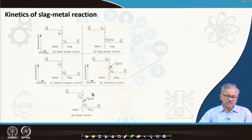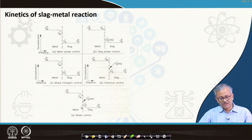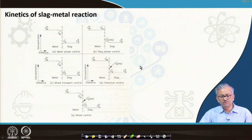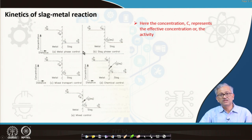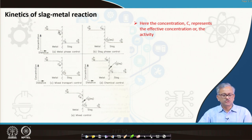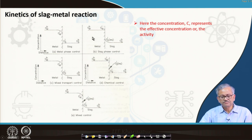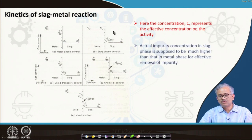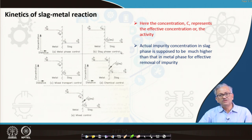Mixed control refers to when transport on the metal side, transport on the slag side, as well as chemical reaction at the interface all have comparable resistances. They are in series and constitute the total resistance — this is called the mixed transport system. All the concentrations shown are effectively the activity, since species transport down the activity gradient. The activity on the metal side is higher than on the slag side, which is why the impurity transfers from metal to slag.